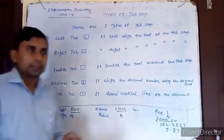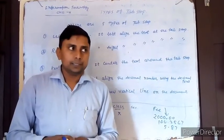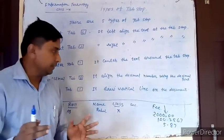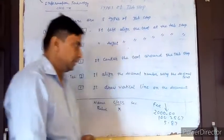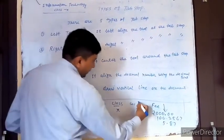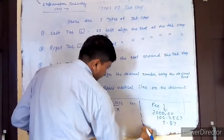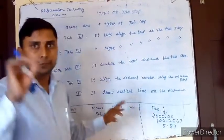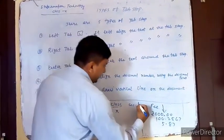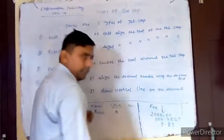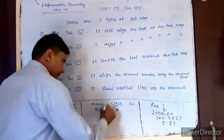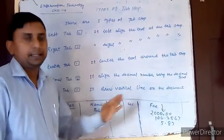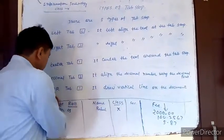Another important type is bar tab. If you want to write data in a tabular form but don't want to create a full table, and you need vertical lines between columns — such as between roll, name, class, and section — you use bar tab. When you set bar tabs and press Enter, it will draw vertical lines. This lets you arrange your data in a neat columnar format with vertical separators, all performed by bar tabs.